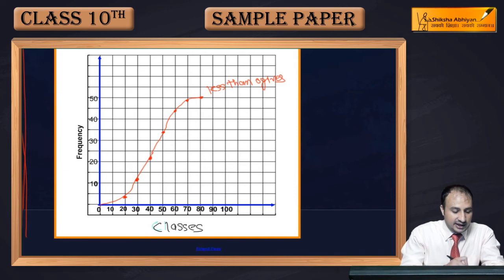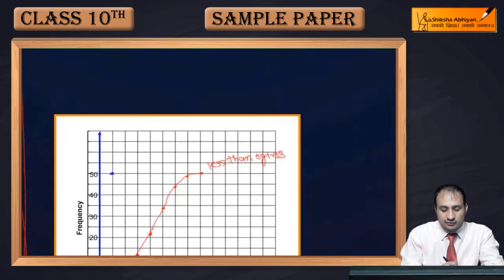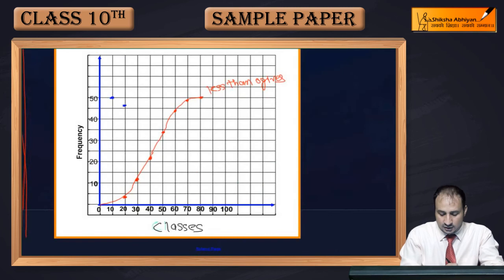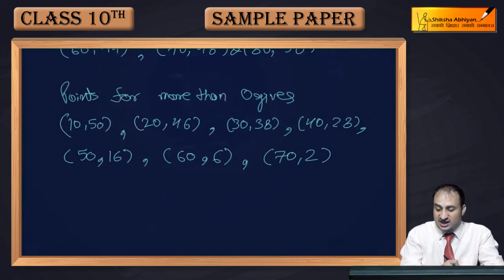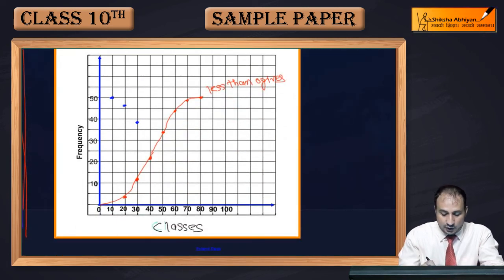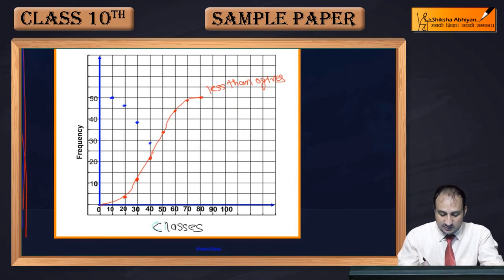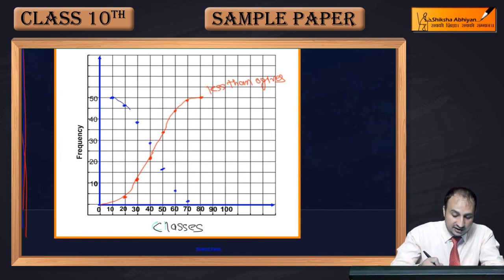Now for more than ogive, when you make the graph, for more than ogive, you will take the points. So first point is 10 at 50. So at 10, what will be, 50 will come. After that, the next point is 20 at 46. So 20 at 46, which is approximately somewhere here. Then 30 at point is 38. So at 30, 38 is approximately somewhere here. Then after that is 40 at 28. So 40 at 28 point is approximately somewhere here. And then after that is 50 at 16. At 50, 16 point is somewhere here. Now 60 at 6, 70 at 2. At 60, 6 is here. Now at 70, 2 point is here. Now when you draw this roughly, then the sketch you get is a little bit backward going.